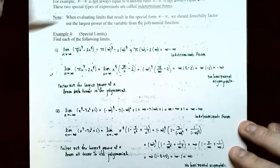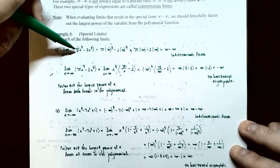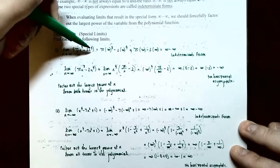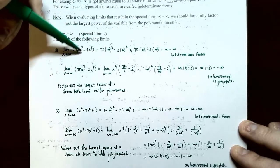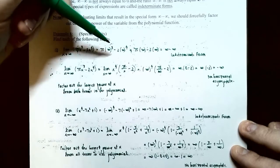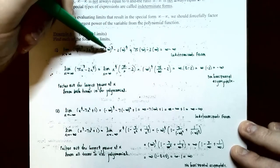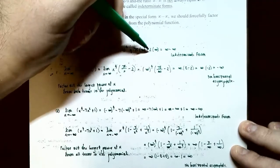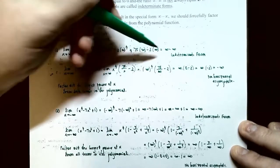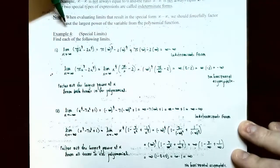Let's look at Example 4, special limits: find each of the following limits. Number one: the limit as x approaches infinity of 75x³ subtract 2x⁴. Since this is a polynomial, imagine plugging in a very large number. You get 75 times infinity cubed minus 2 times infinity to the fourth — that gives you infinity minus infinity, which is an indeterminate form.